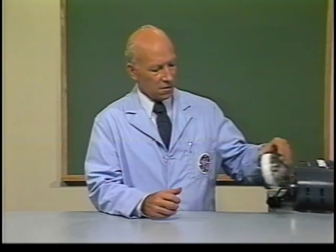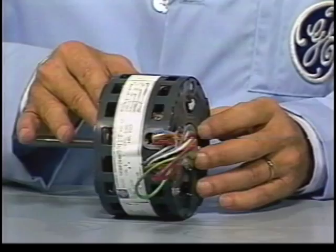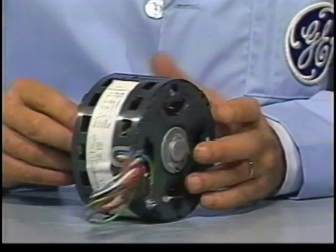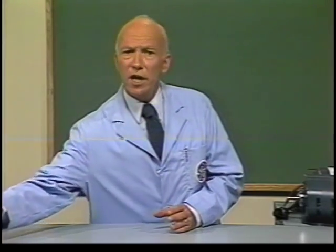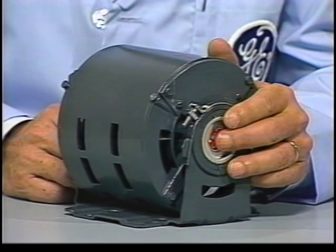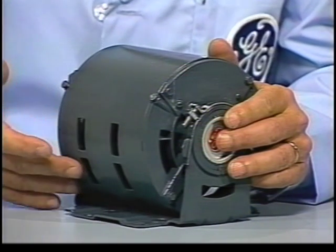In our last program we introduced the various mechanical features of FHP motors, including enclosures, bearings, and motor mountings. There are four types of motor enclosures. The first is the open enclosure, which has a number of ventilating openings allowing external air to enter and cool the motor windings. A variation is the open drip proof enclosure, where the ventilating openings are found only in the bottom half of the motor, allowing air to enter but not drops of moisture.